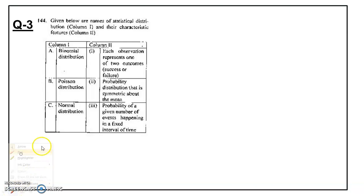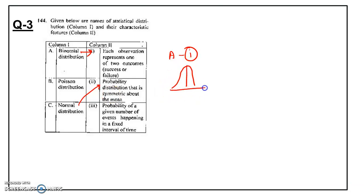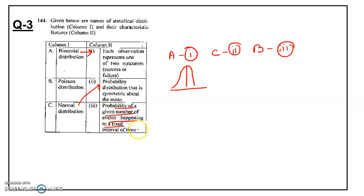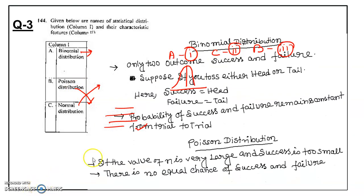Next question involves matching distributions. Binomial distribution: one observation represents one of two outcomes — success or failure. Normal distribution: the probability distribution that is symmetric about the mean — we get the bell-shaped curve and mean equals median equals mode. Poisson distribution: the probability of a given number of events happening in a fixed interval of time. So C is 2, B is 3, and Poisson distribution matches accordingly.